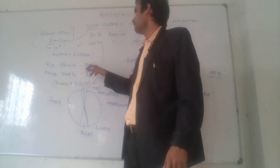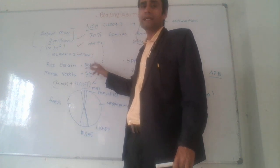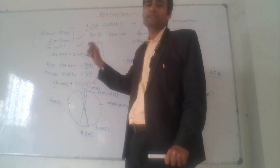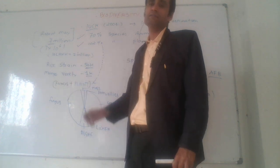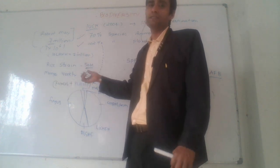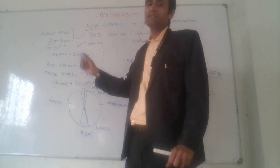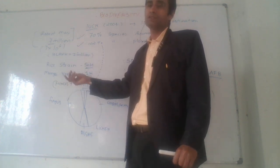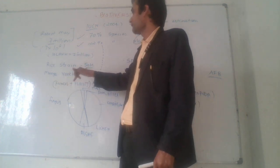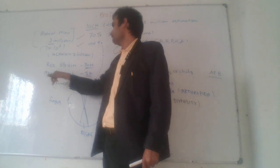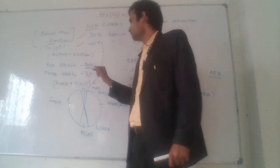Approximately 5,500 types of rice strains are found. A strain is not a species — it is a variety or sub-variety of rice. And there are approximately 1,000 mango varieties.